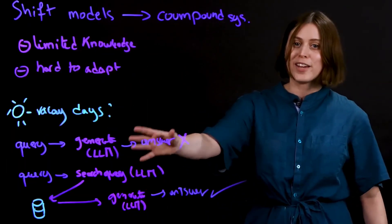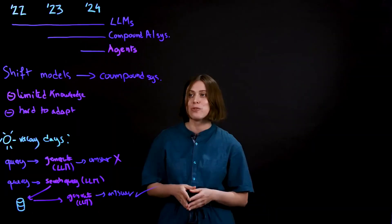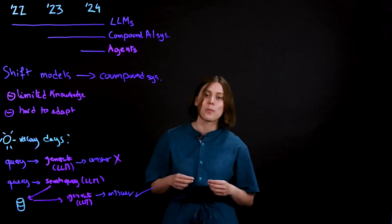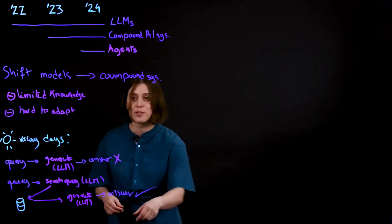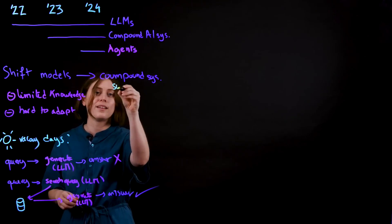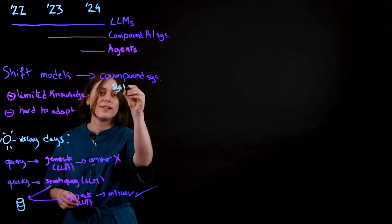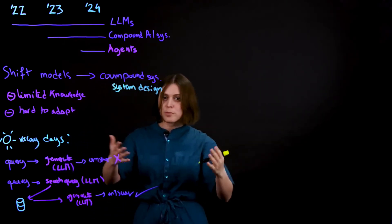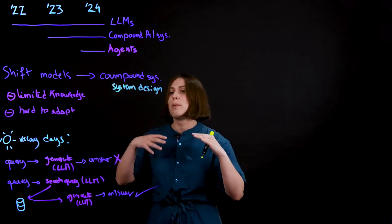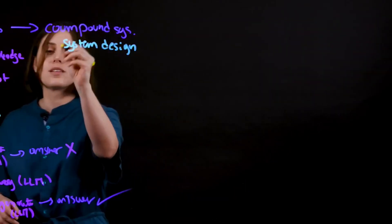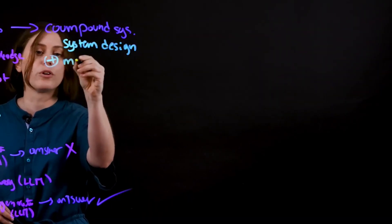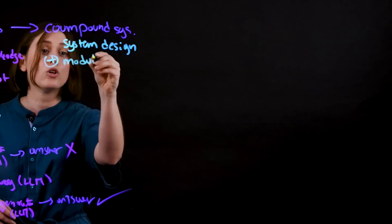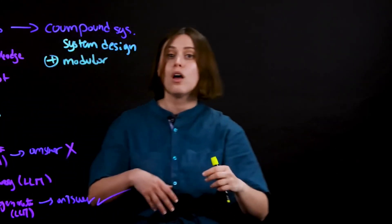This is an example of a compound AI system, and it recognizes that certain problems are better solved when you apply the principles of system design. By the term system, you can understand there's multiple components - systems are inherently modular. I can have a model, I can choose between tuned models, large language models, image generation models.